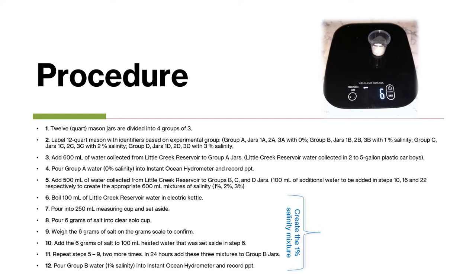To create the 1% salinity mixture, I first boiled 100 milliliters of water from the reservoir in an electric kettle, then poured that into a 250 milliliter measuring cup and set it aside. I poured 6 grams of salt into a clear solo cup and weighed it on the gram scale to confirm. I added the 6 grams of salt to the 100 milliliters of heated water. I repeated this process two more times, and in 24 hours I added those three mixtures to the jars in Group B.